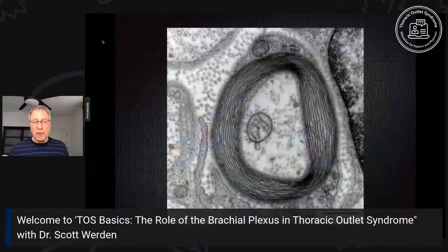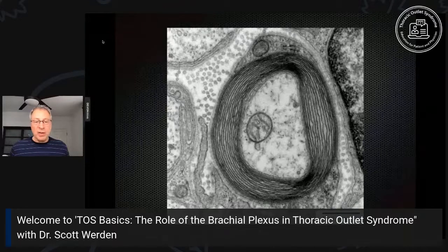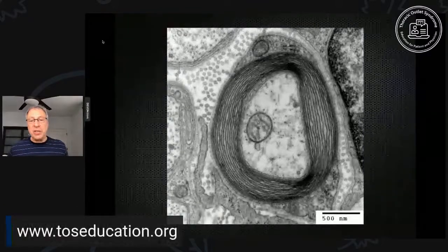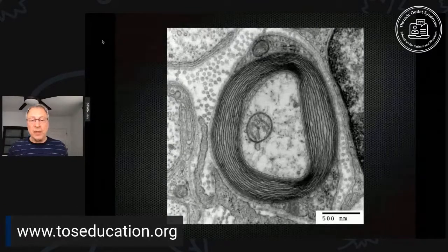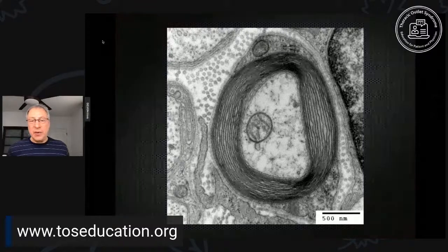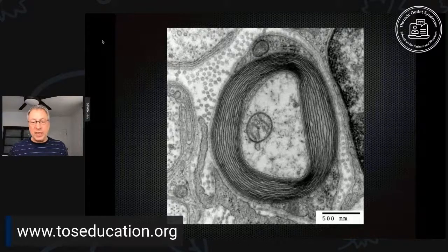This is a photomicrograph of a myelinated nerve — like cutting right through the middle of a cable. In the middle is the axon, and around it you can see rings and rings of very thin dark layers — that's myelin. At the very top you can see the cell nucleus for the oligodendrocyte or Schwann cell that makes this type of insulation around the nerve.